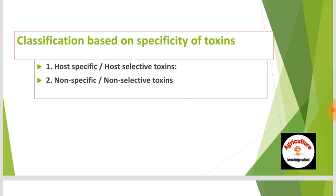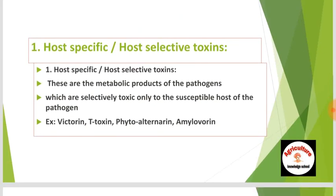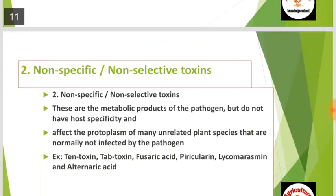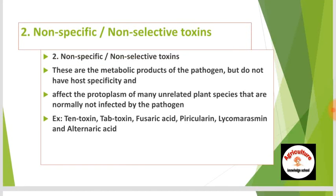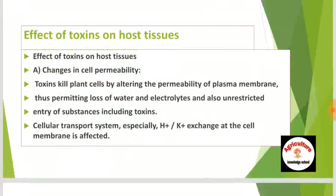Host-specific or host-selective toxins are metabolic products of pathogens which are selectively toxic only to the susceptible host of the pathogen. Examples include victorin, T-toxin, phytoalternarin, and amylovirin. Non-specific or non-selective toxins are metabolic products of the pathogen that do not have host specificity and affect the protoplasm of many unrelated plant species not normally infected by the pathogen. Examples include tentoxin, tabtoxin, fusaric acid, pyricularin, lycomarasmin, and alternaric acid.